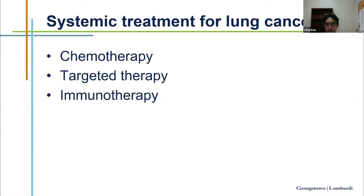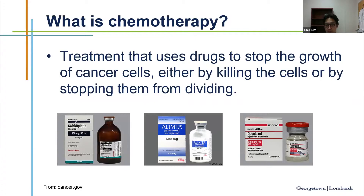Examples of chemotherapy include carboplatin and cisplatin — those are platinum-based chemotherapies. One of the commonly used chemotherapies is pemetrexed for lung adenocarcinoma. Taxol can be used for both histologies.